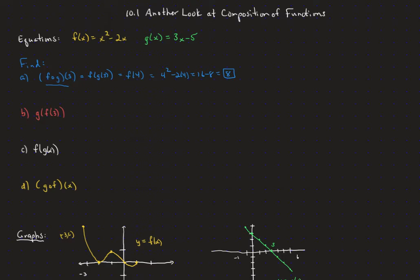For g of f of 3, we first find f(3): 3 squared minus 2 times 3 is 9 minus 6, which equals 3. So that becomes g(3), and as we saw before, g(3) is 9 minus 5, which is 4.